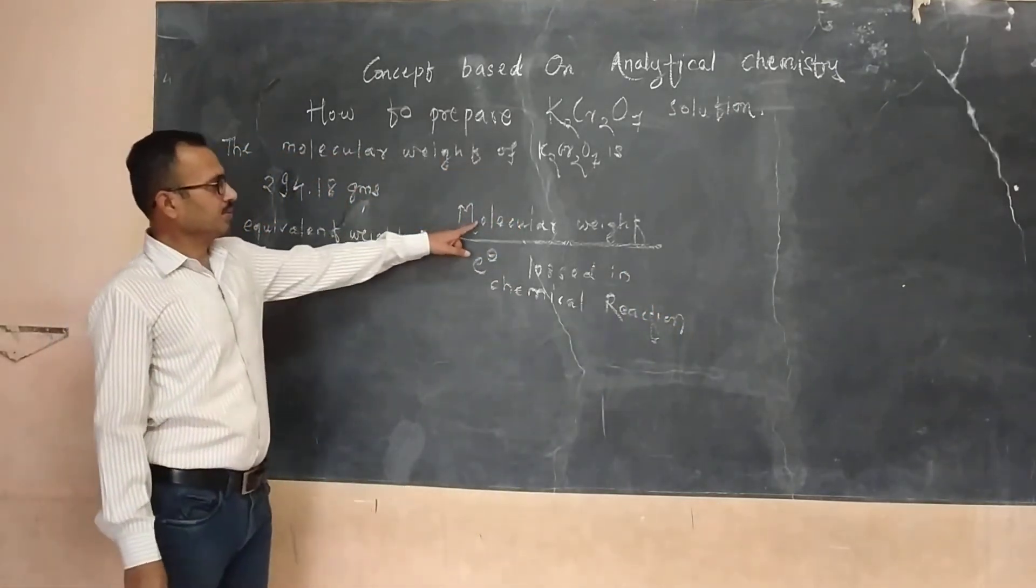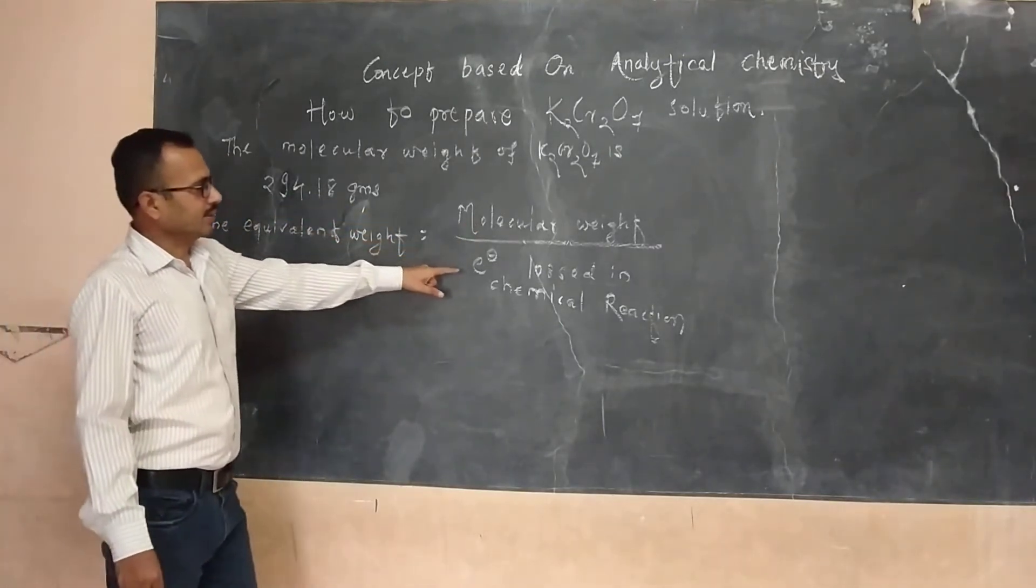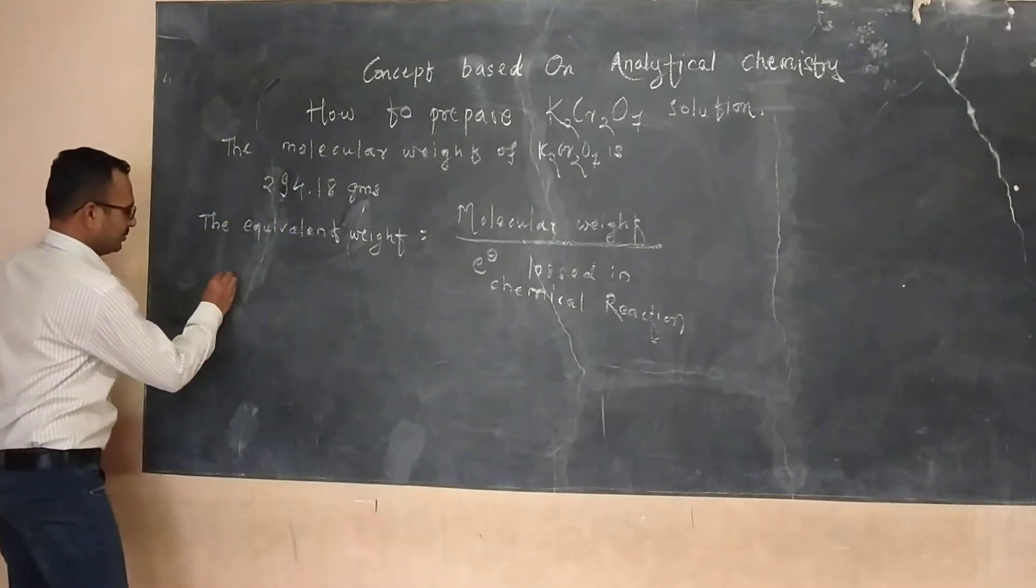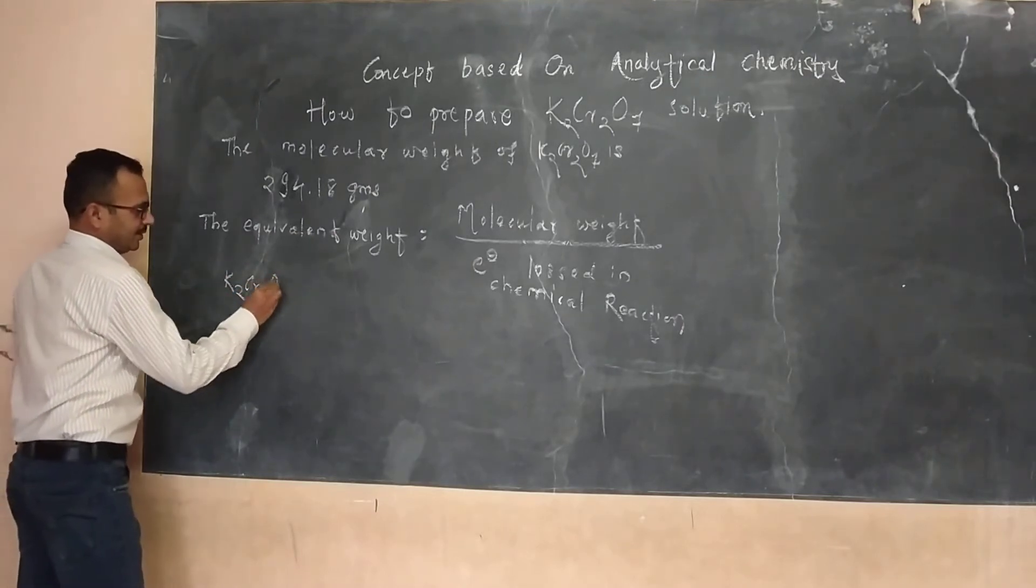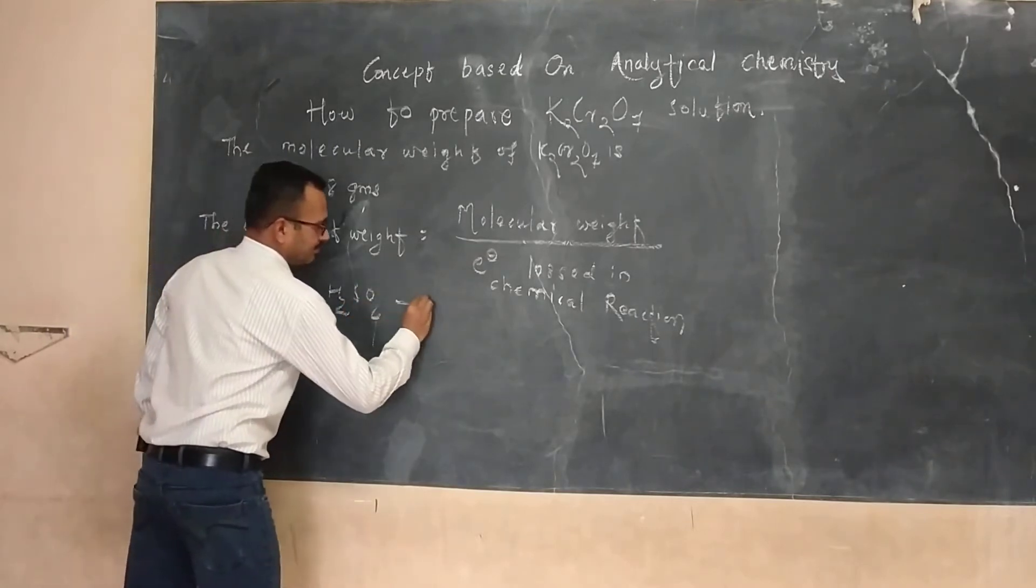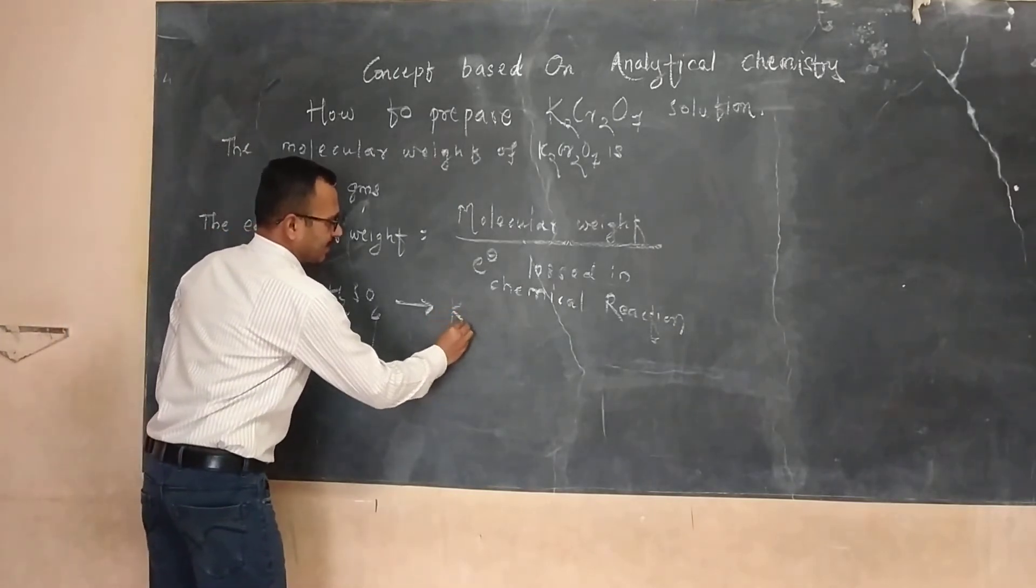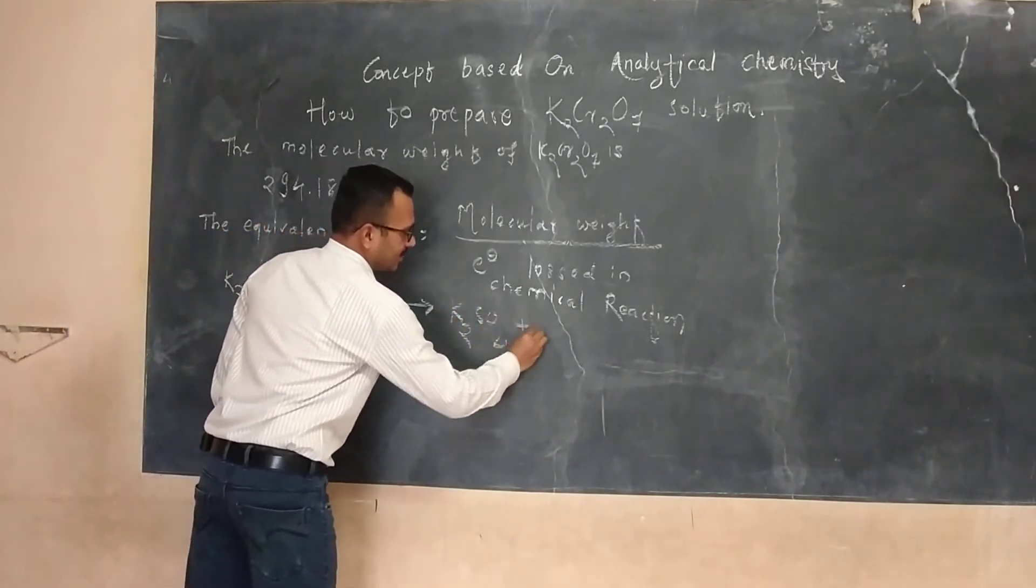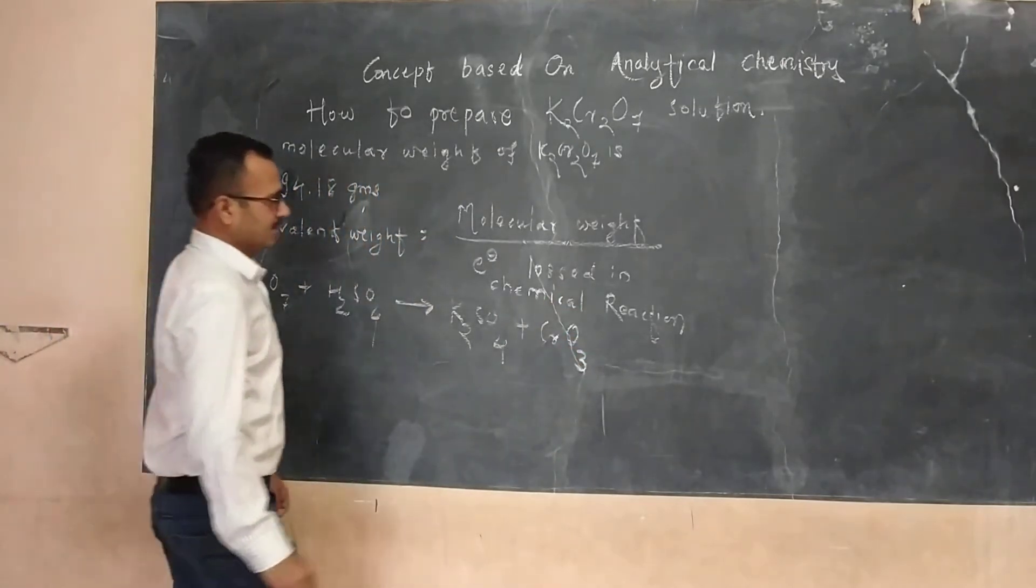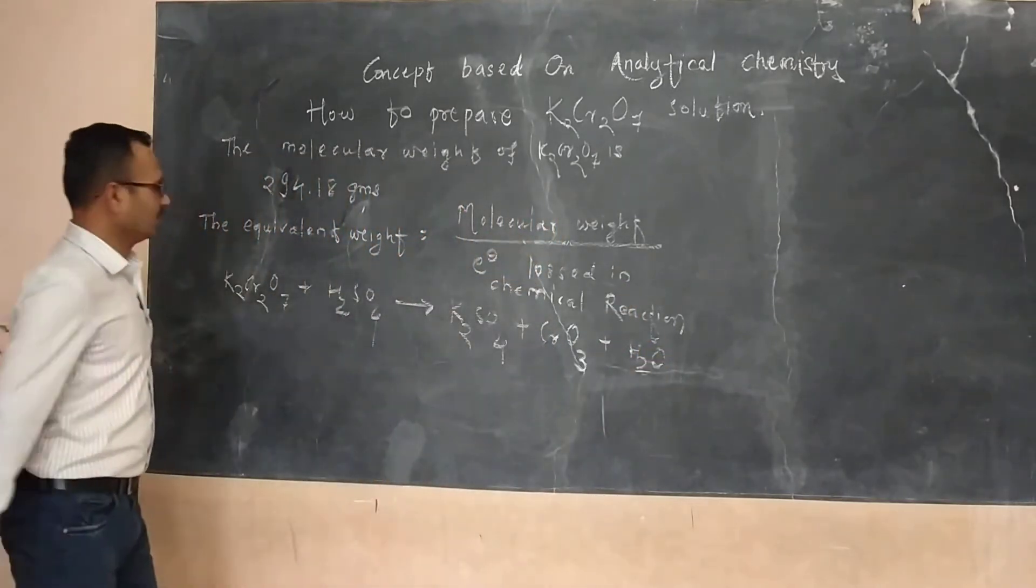The molecular weight is 294.218. But the chemical reaction of potassium dichromate with sulfuric acid is: potassium dichromate reacts with sulfuric acid to give potassium sulfate plus chromic oxide CrO3 plus water.